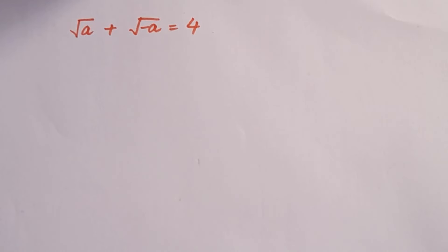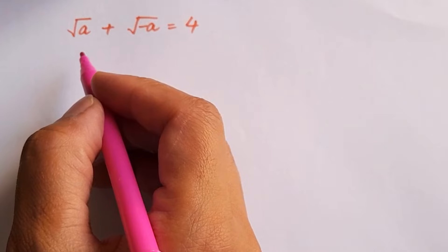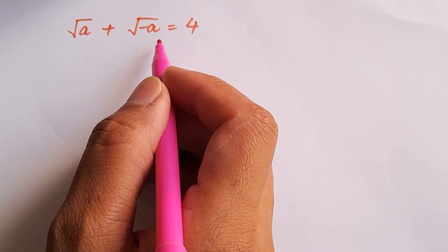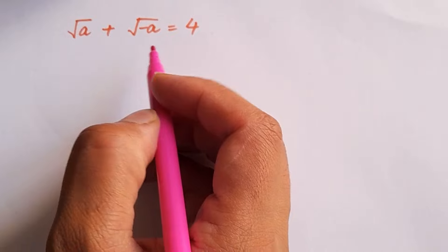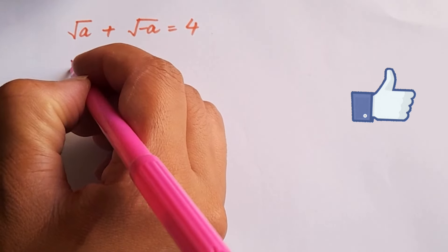Hello and welcome back. In this video we are going to solve this radical problem. If root a plus root negative a is equal to 4, then we have to find the value of a in this problem. So let's get started and see how we can find out.